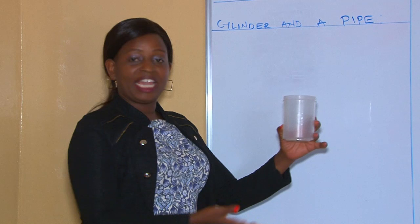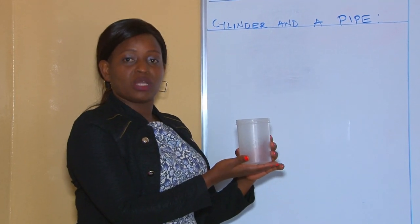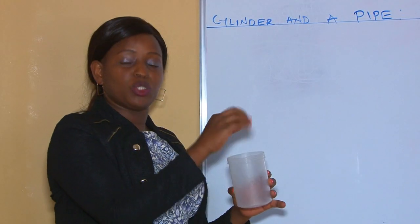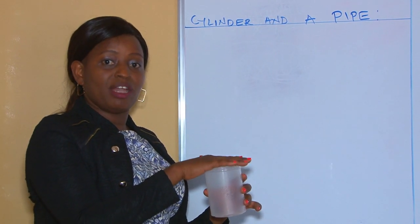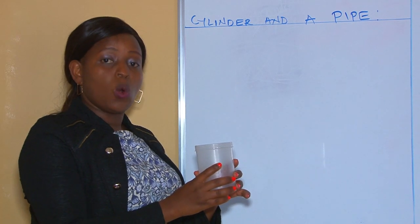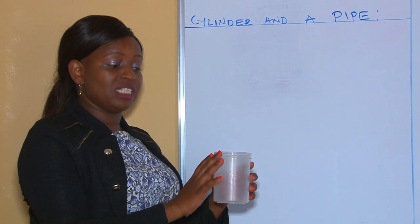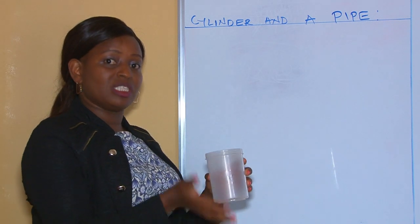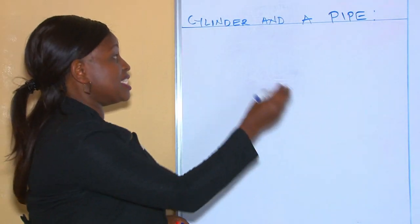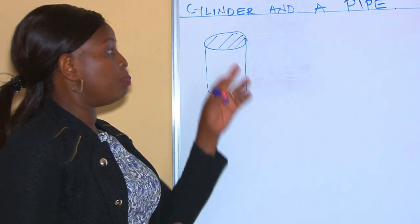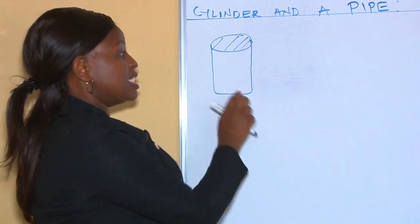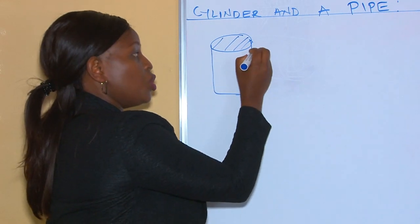Now we'll be able to get the surface area of an open cylinder. What is an open cylinder? This kind of shape here — it's a cylinder, but as you can see, on the top part there's no circle. We can put water, milk, or anything because this part is open. Therefore, it still has the curved surface but only one circle at the bottom.